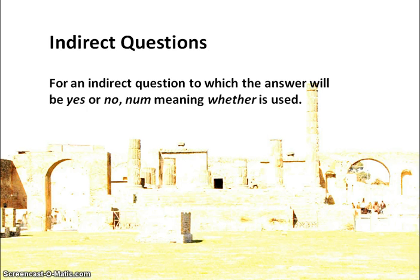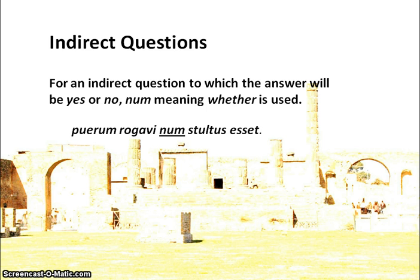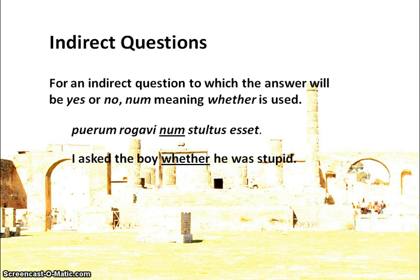For an indirect question to which the answer will be yes or no, num meaning 'whether' is used. Some Latin questions do not use interrogative vocab like who, what, when, where — they may be introduced by -ne on the end of a word, or nonne meaning 'surely', or num meaning 'surely not'. When turned into an indirect question, num means 'whether'. For example: puerum rogavi num stultus esset — 'I asked the boy whether he was stupid.' The original direct question was 'Are you stupid?' expecting either yes or no.